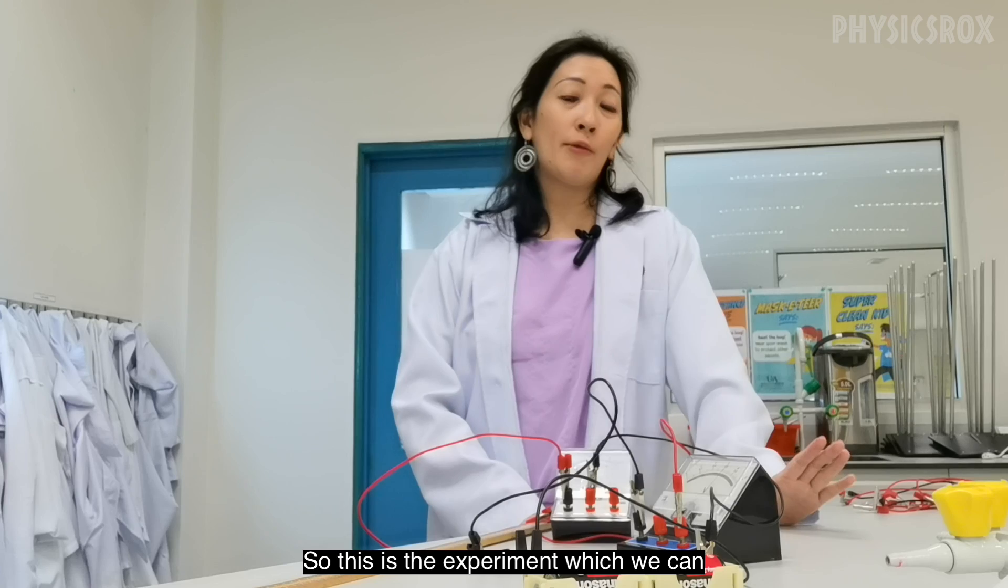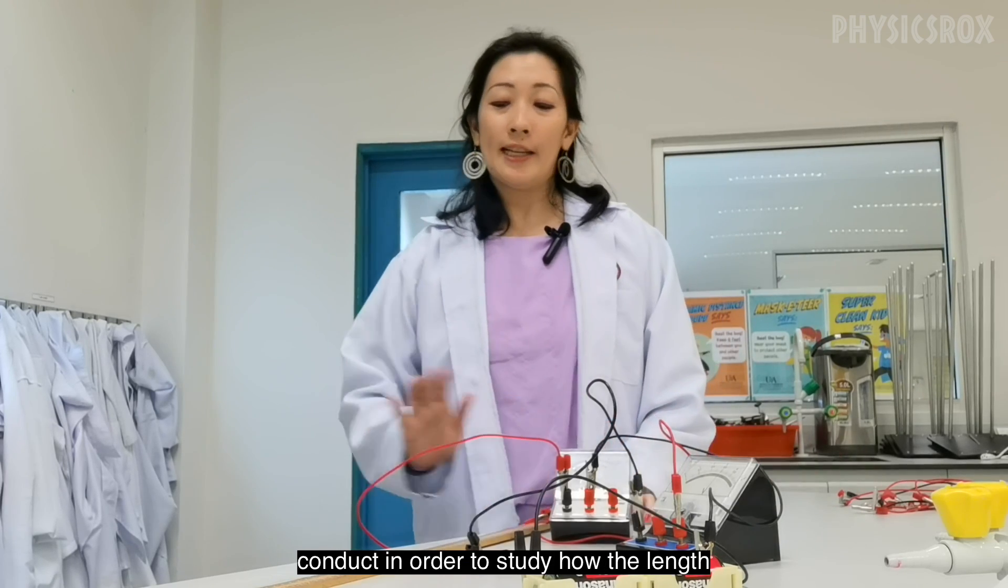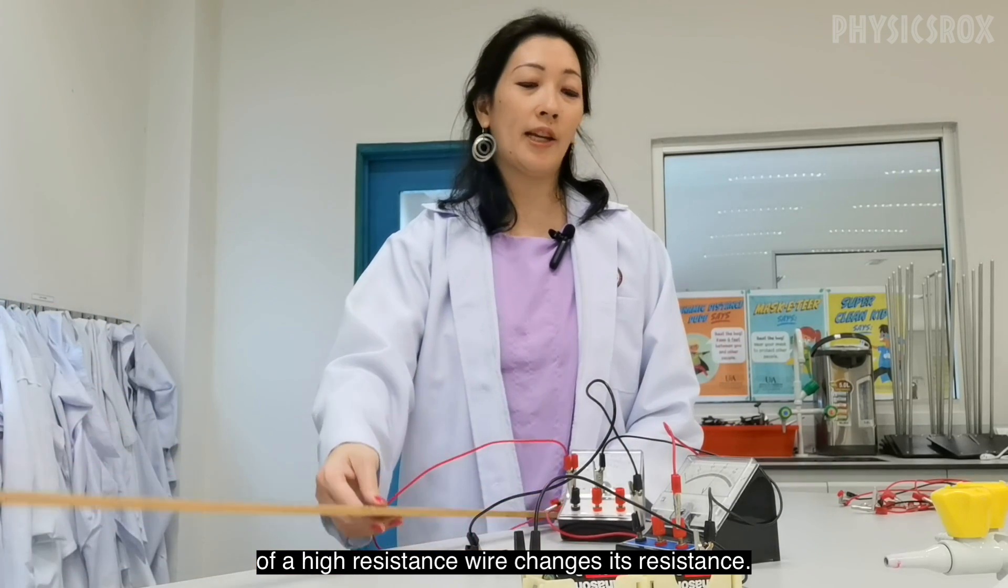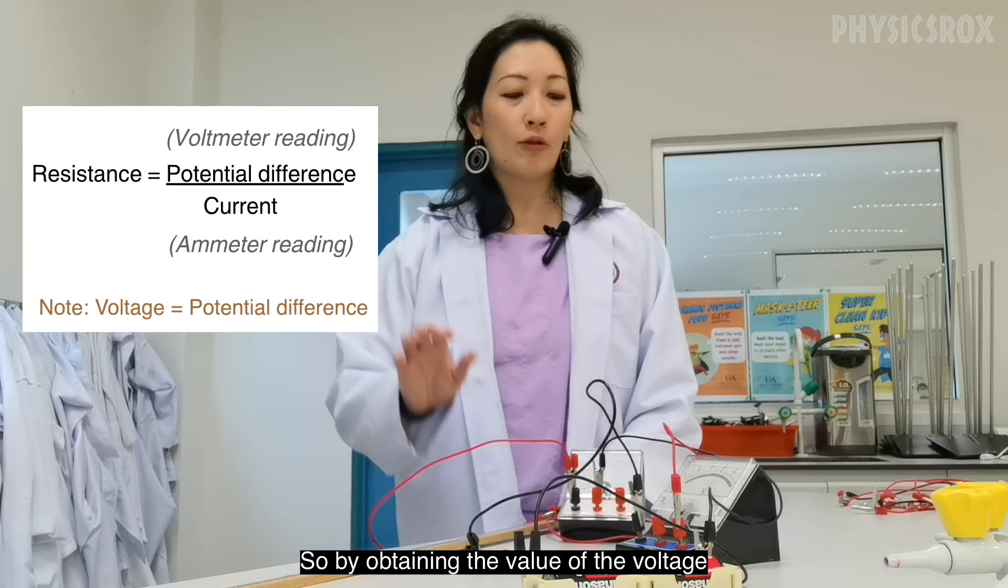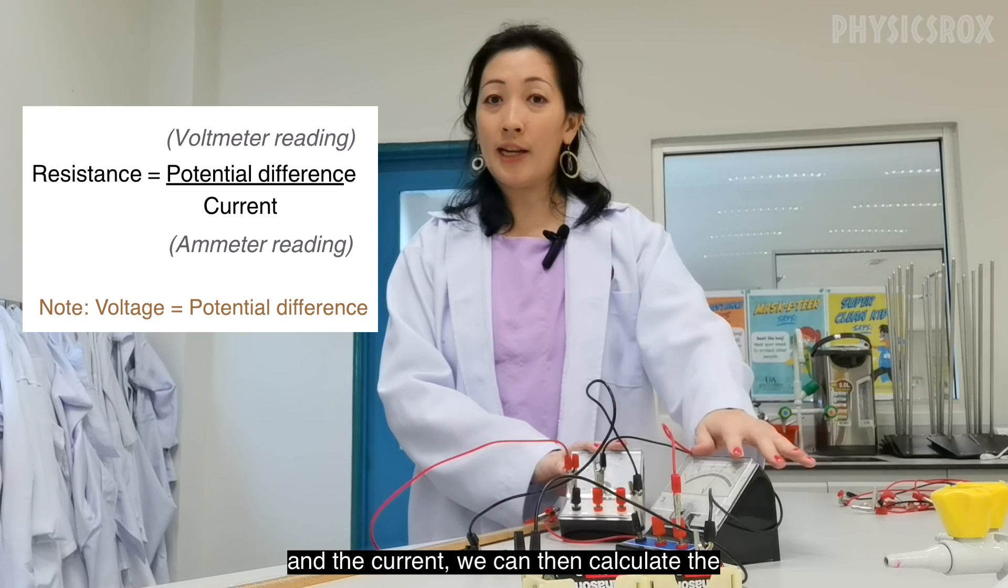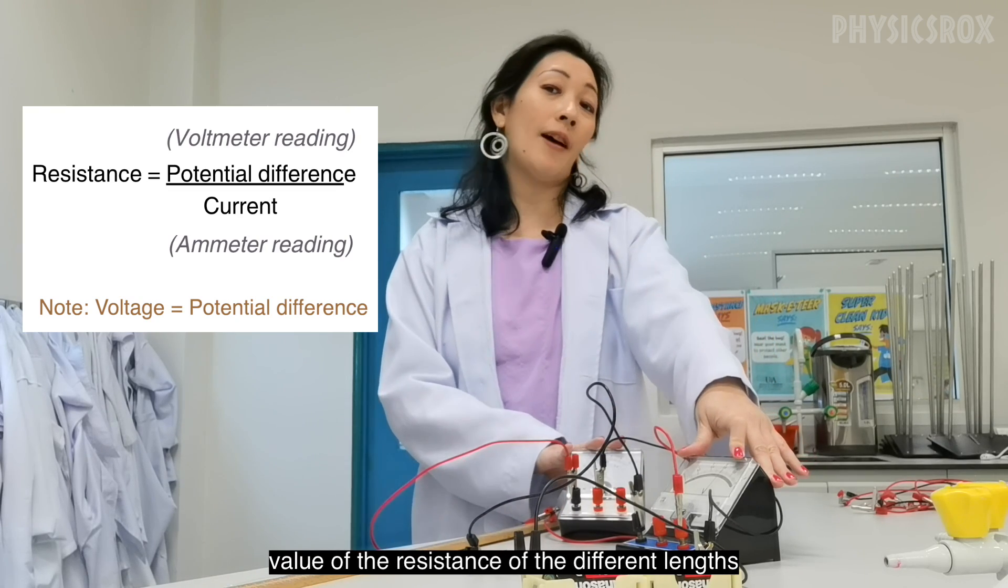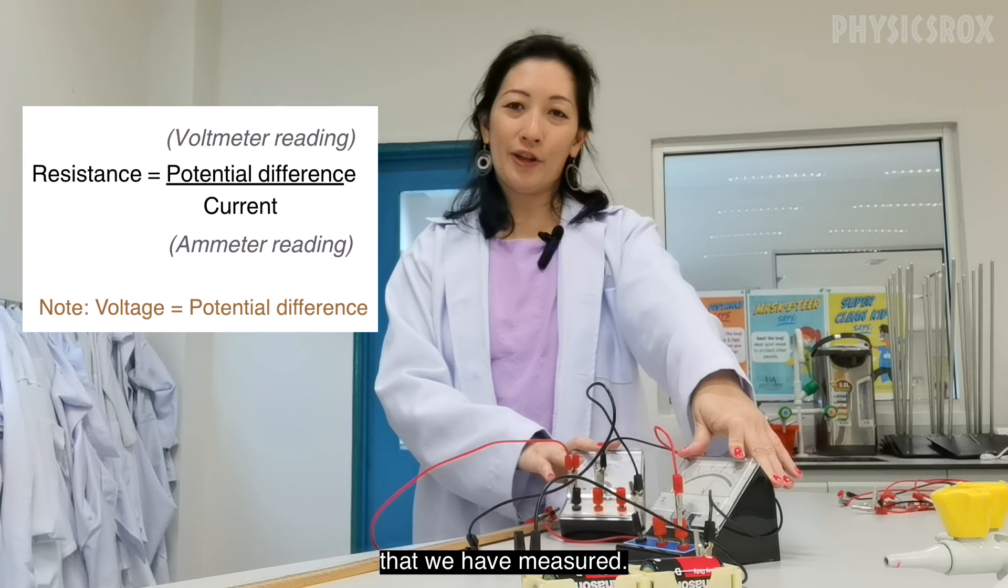So this is the experiment which we can conduct in order to study how the length of a high resistance wire changes its resistance. So by obtaining the value of the voltage and the current, we can then calculate the value of the resistance of the different lengths that we have measured.